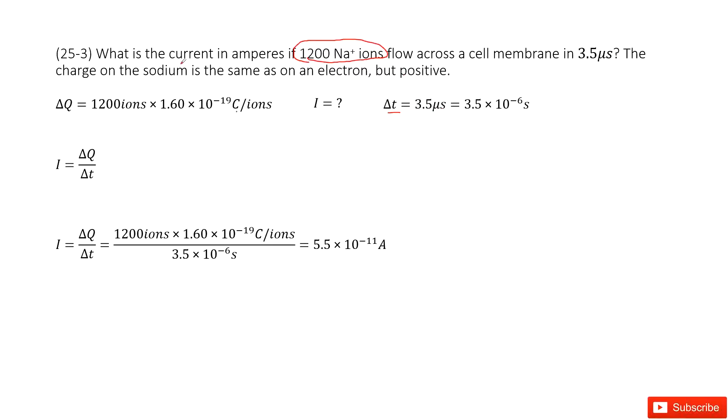It asks you for the current. What is the current there? So the current there we can consider is I. So in this problem it looks like delta Q is given, delta t is given, and it asks you to find the current.